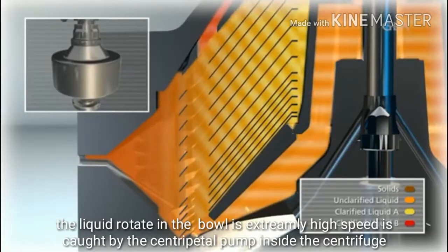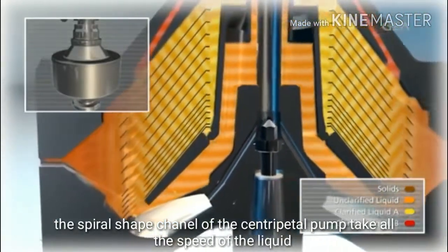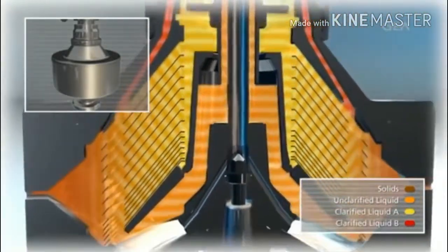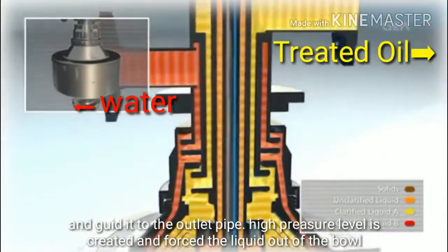The liquid rotating in the bowl at an extremely high speed is caught by a centripetal pump. The spiral shaped channels of this centripetal pump take up the speed of the liquid and guide it to the outlet pipe. A high pressure level is created there, which forces the liquid out of the bowl.